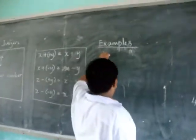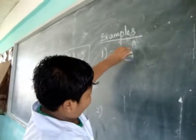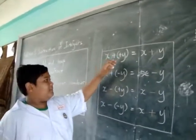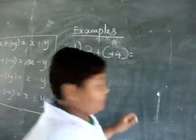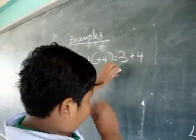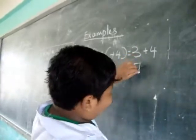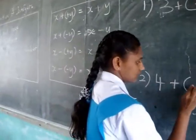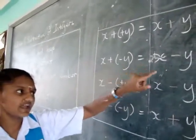Example 1. x plus positive y equals x plus y. x plus negative y equals x minus y.